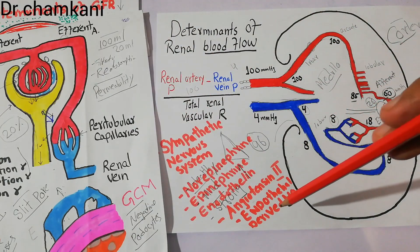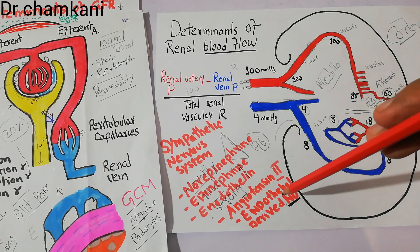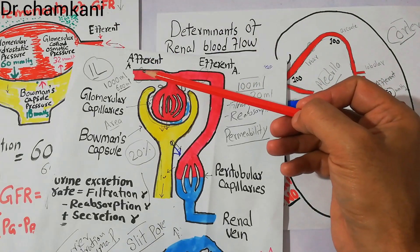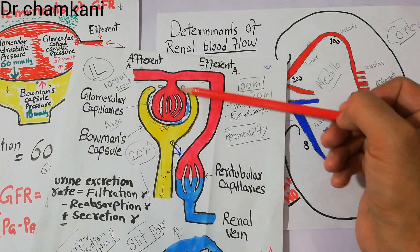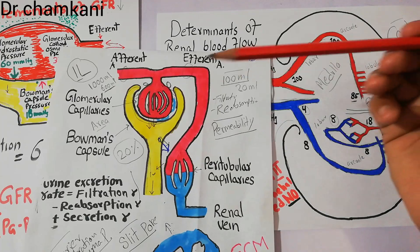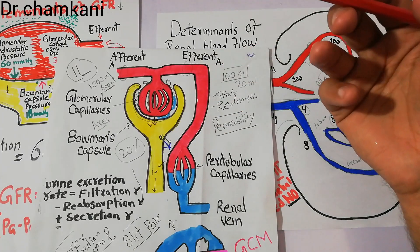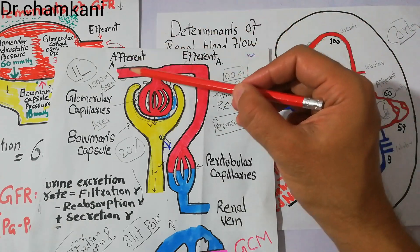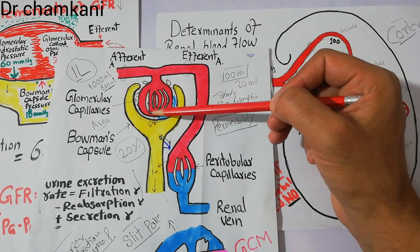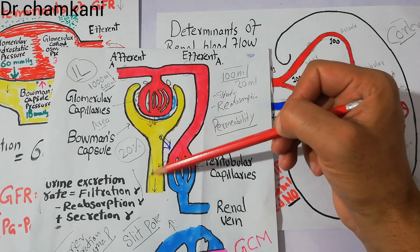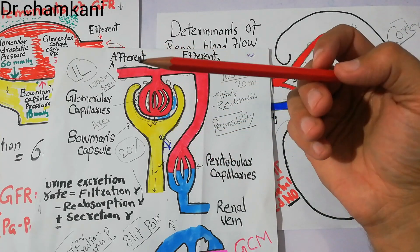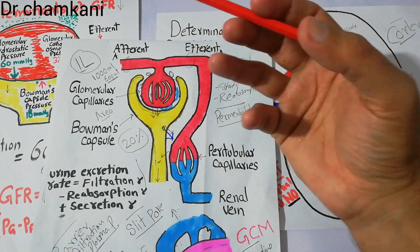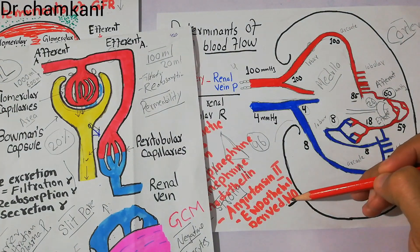Endothelial-derived nitric oxide is a factor which basically maintains vasodilation. It prevents constriction of the afferent and efferent arterioles and helps in the normal excretion of sodium and water through filtration. When filtration occurs in the glomerular capillaries, the filtrate moves into Bowman's capsule and the nephron tubules to begin urine formation. For this process to occur normally, there is a basal secretion of endothelial-derived nitric oxide.